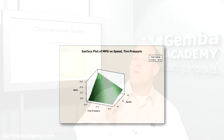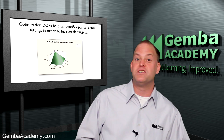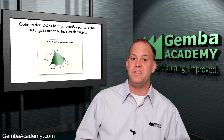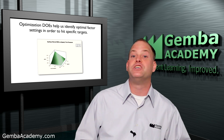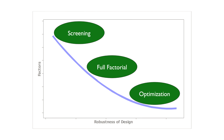Last but certainly not least, optimization DOEs help us identify optimal factor settings in order to hit specific targets. These are definitely the most advanced of the three, but when done properly, the information they provide can be extremely powerful. In summary, screening designs allow us to test the most factors but are the least robust of the three DOE types, while optimization designs involve fewer factors but are highly robust in nature.